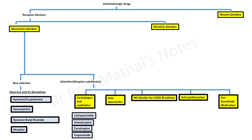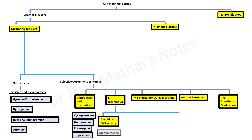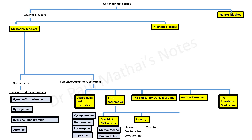The anticholinergic antispasmodics may be classified broadly into three groups: those devoid of CNS activity like methantheline and propantheline; urinary antispasmodics like flavoxate, oxybutynin, darifenacin, trospium, solifenacin, tolterodine, and others.